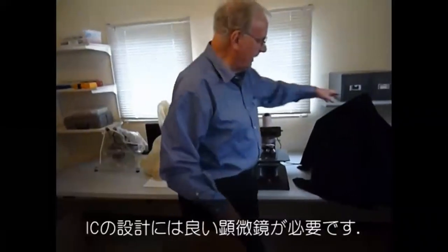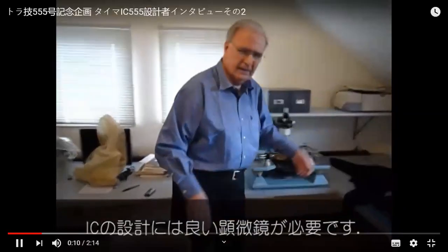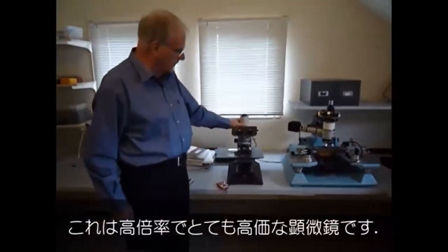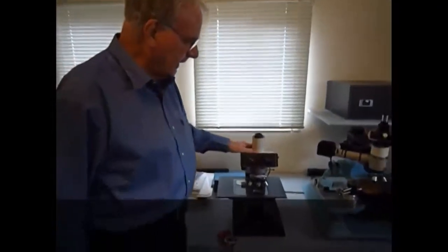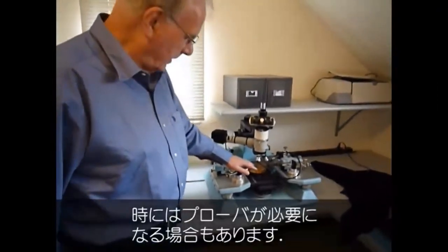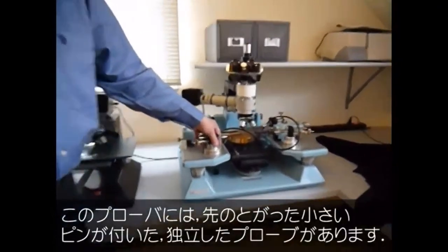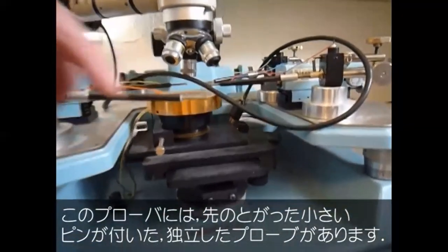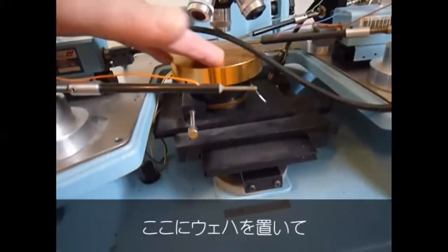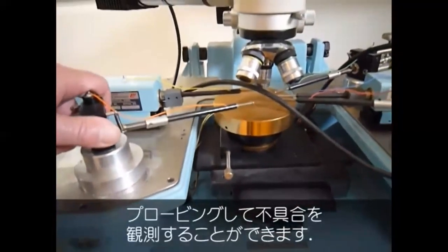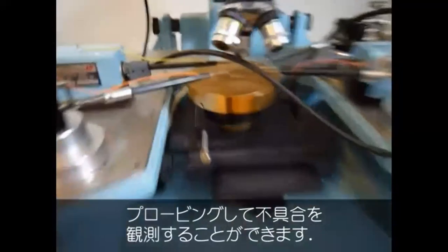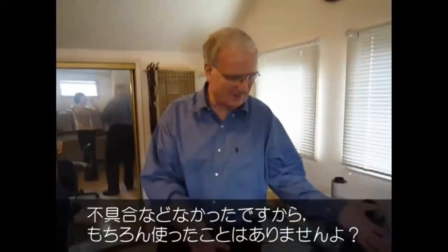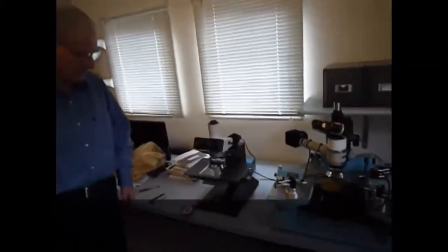What you also need to design an IC is a good microscope. This is a fairly expensive microscope with a high magnification. And then, occasionally, you need a prober. And these are individual probes that have a tiny little pin, very sharp point, and you put the wafer on here, and you can probe and measure if something goes wrong. Of course, I never use it. Nothing ever goes wrong, right?